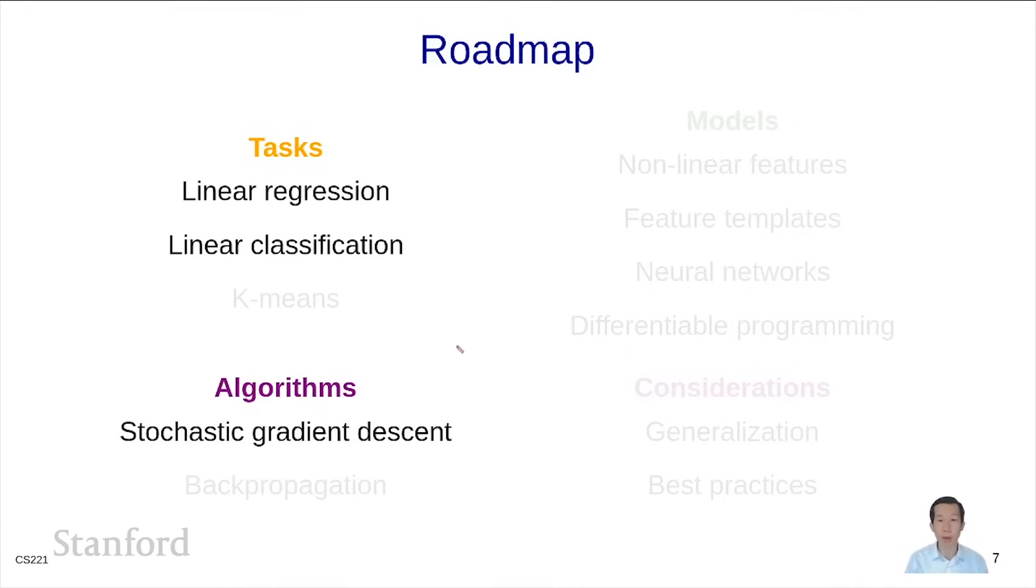Next, we're going to hop over to models and improve from linear models. First, we'll show that even linear models can be pushed to their limits by using non-linear features with the linear machinery. We can use feature templates to organize the set of features that we have.